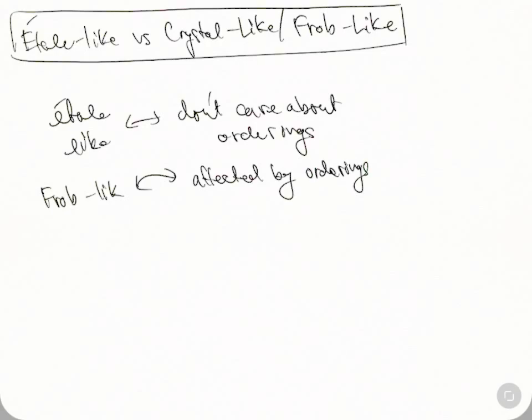These things are, let me draw what an Etal-like category looks like. They're like loopy things. A category with one object where all the morphisms are invertible, that's a group, that's going to be something that's Etal-like.